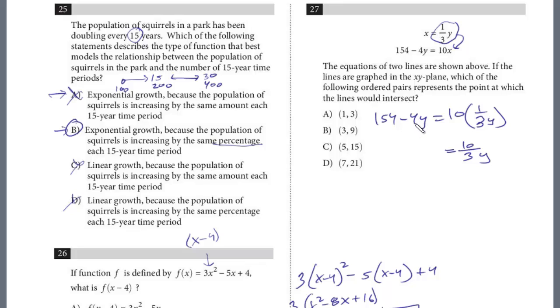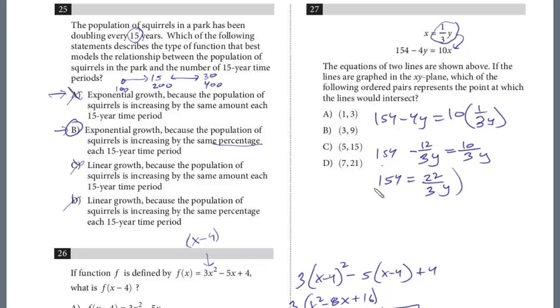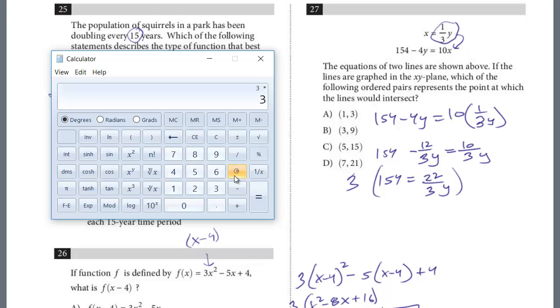I am going to change this minus 4y into thirds, so I can be consistent with the right side. So that would be the same as minus 12 thirds y, and then we have 154. And so now we're going to add the 12 thirds y over. So we've got 154, and that would be 22 thirds y. And this is calculator permitted, so let's get out the calculator here. So I'm going to multiply both sides by 3 to clear that. So I have 3 times 154. And then 462 is going to equal 22y, and so I'm going to divide by 22.